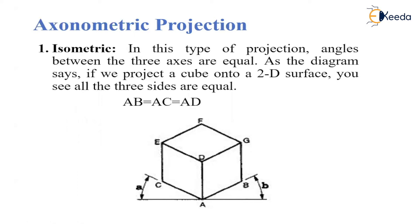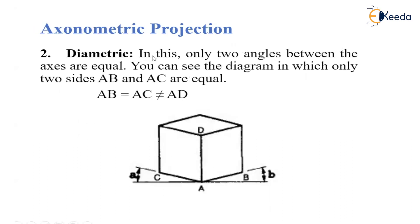If we project a cube onto a 2D surface, we will get all three sides equal. In the diametric projection, two angles between the axes are equal — AB equals AC — and AD will have a different length. Two axes will have the same length and one axis will have a different length.